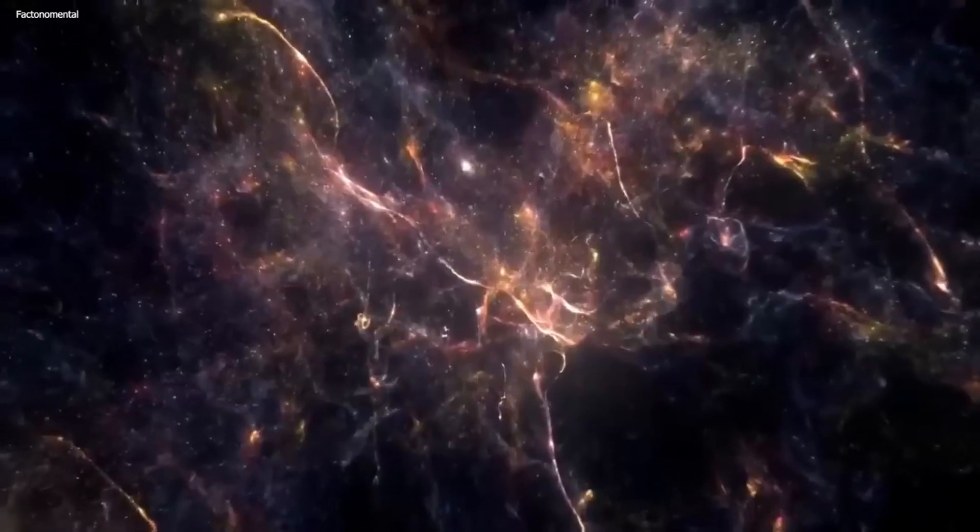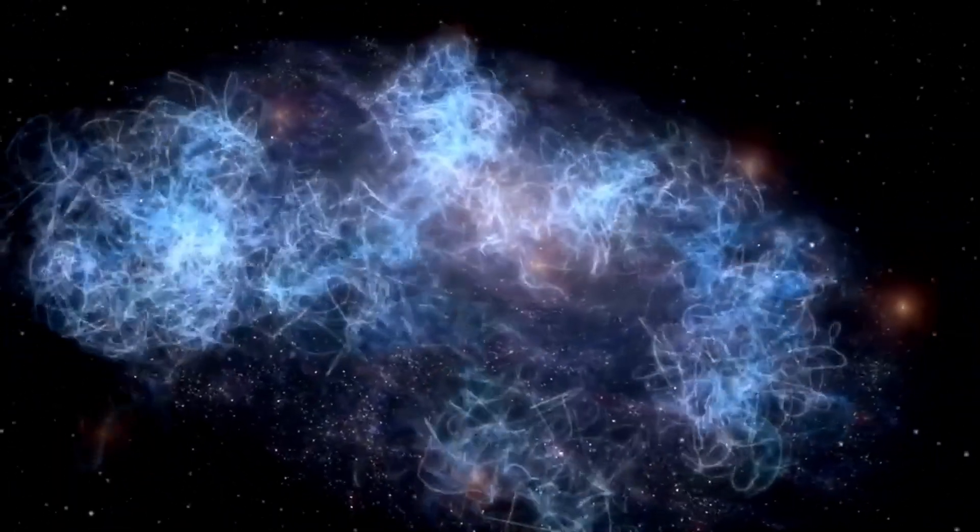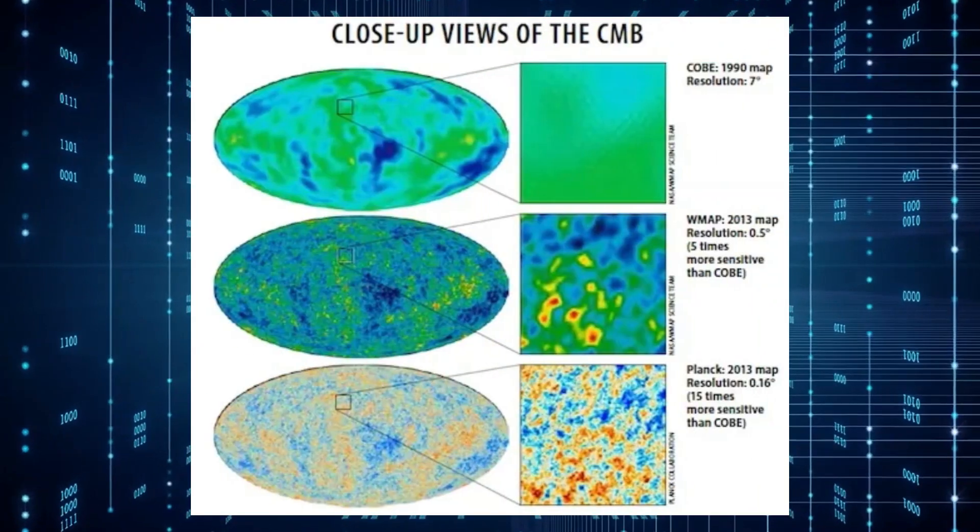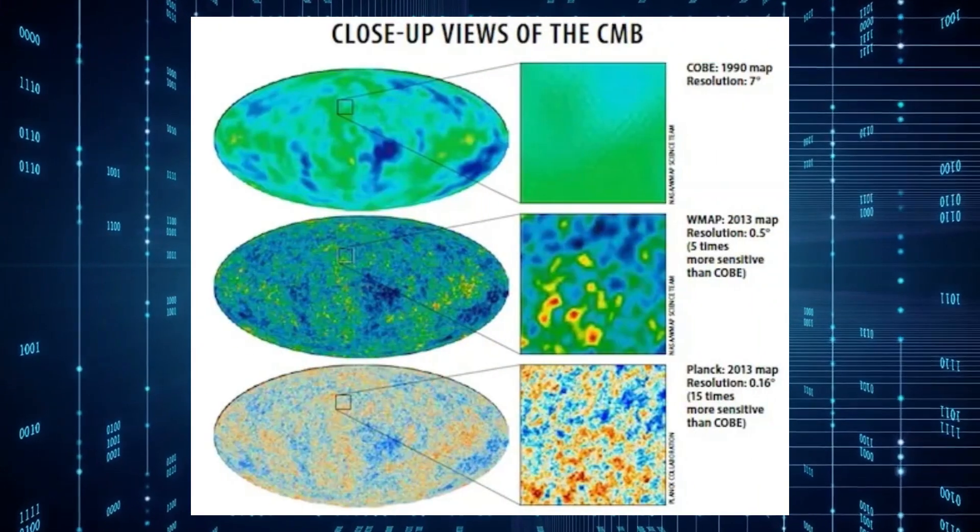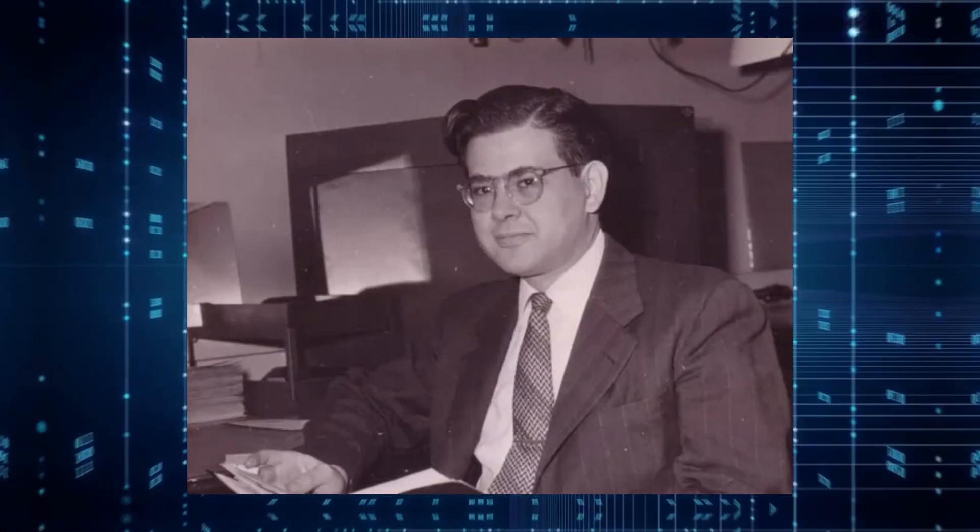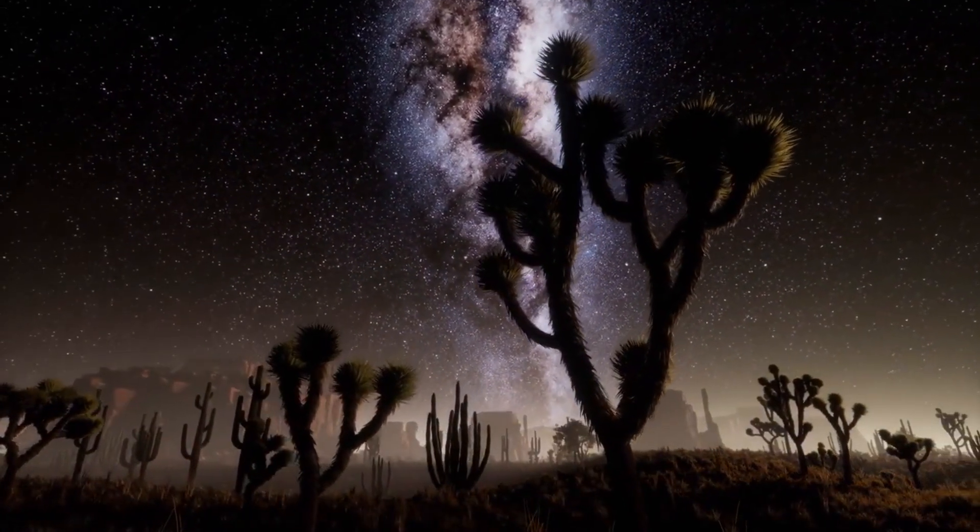Referred to as the afterglow of the Big Bang, this luminous phenomenon is more precisely identified as the cosmic microwave background, also known as CMB. Initially, this theory was put forward by Ralph Alpher and fellow scientists in 1948. Its accidental discovery occurred almost two decades later.